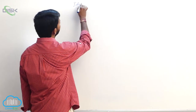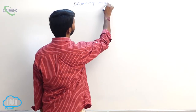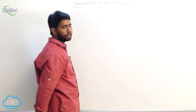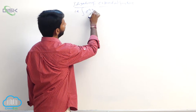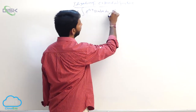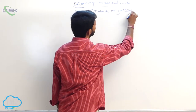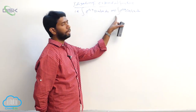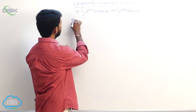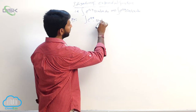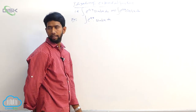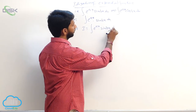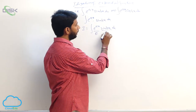Next: integration of exponential functions. These are of the form integral of e power ax into sin bx dx, or integral of e power ax into cos bx dx. To find the value of integral of e power ax into sin bx dx, let i equal to integral of e power ax into sin bx dx, where e power ax is the exponential function and sin bx is the trigonometry function.